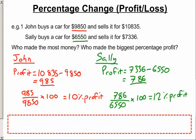What that means is that although John made more money in total, Sally made a better percentage profit because she made 12% profit on what she spent. That is, if they spent the same amount of money to start with, Sally would have made more money in total.